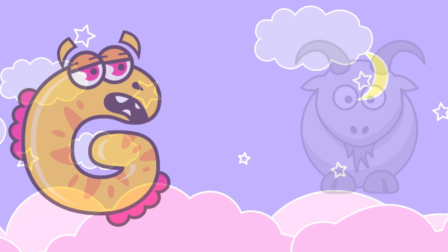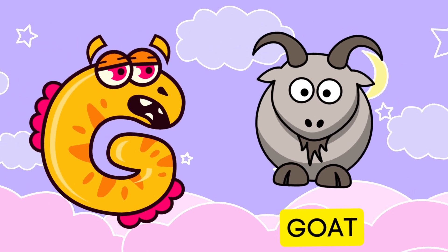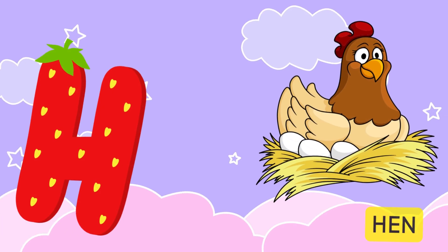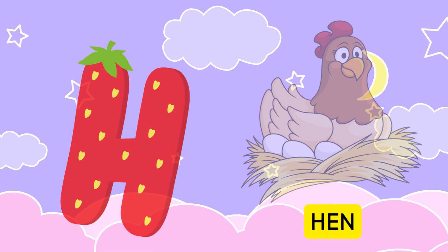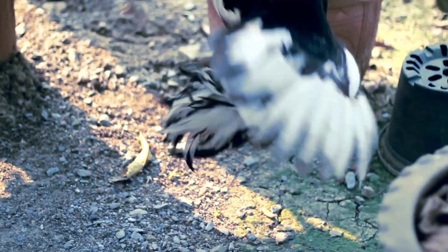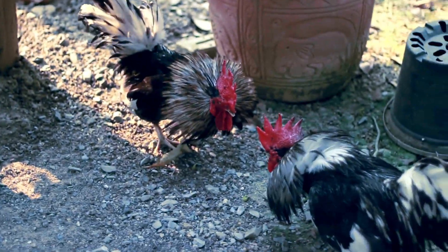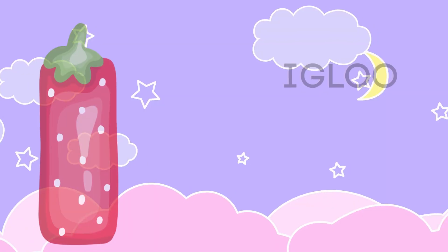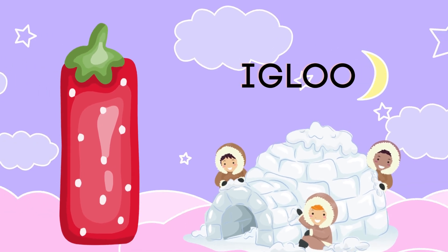G is for goat, g-g-goat. H is for hand, h-h-hand. I is for igloo, i-i-igloo.